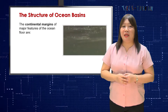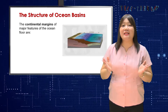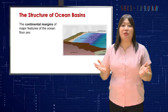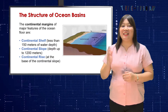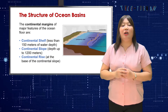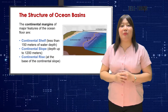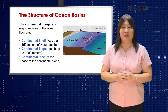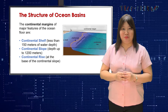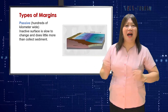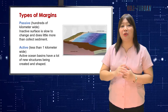The structure of ocean basins involves measuring the size and shape of the Earth's ocean basins. The continental margins and major features of the ocean floor include the continental shelf with less than 150 meters of water depth, the continental slope or steep ramp to a depth up to 1,200 meters, and the continental rise found at the base of the continental slope. These margins may be passive, whose shelf may be hundreds of kilometers wide, or active, whose shelf may be less than 1 kilometer wide.